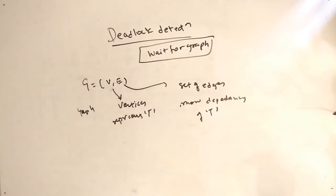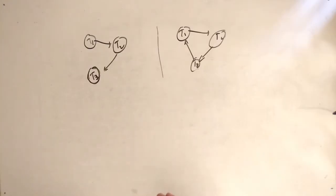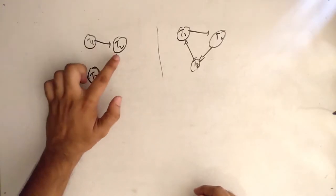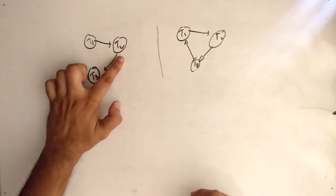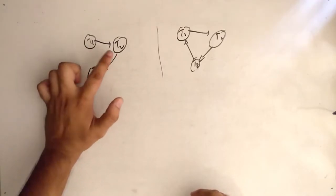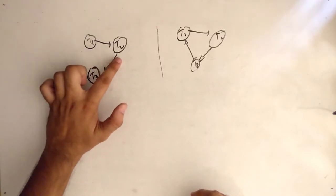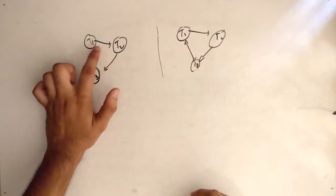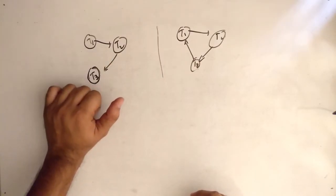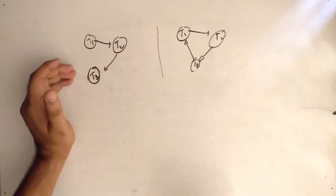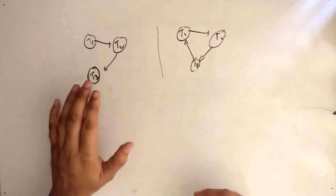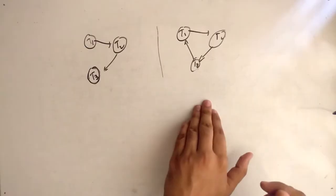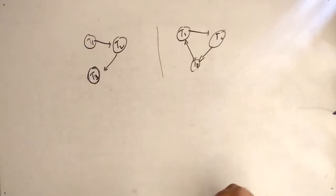Let's see an example. The first example we have is T1 to T2, T2 to T3. These are the vertices T1, T2, T3, and this arrow is the dependency — so V comma E. This was the wait-for graph. This is the first graph and this is the second graph.